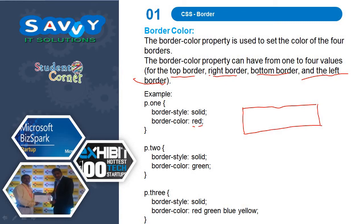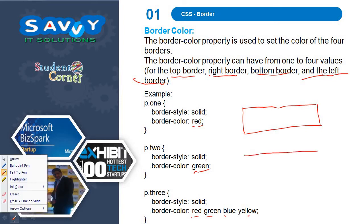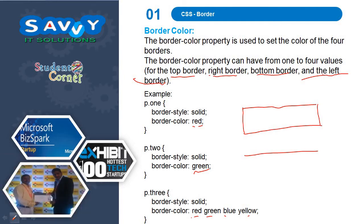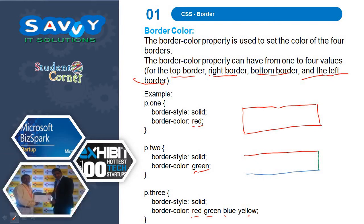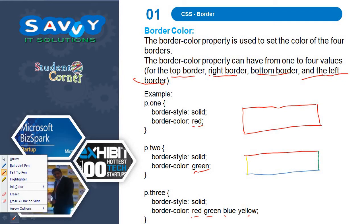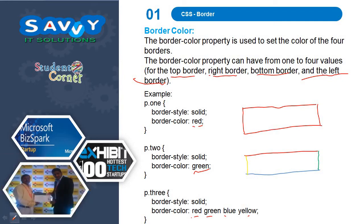Initially the color is red, so all the sides are red. I am giving green — all the sides are green. Now here one is red, green, blue and yellow. I am choosing brown for the top, next is green, next is blue, next is yellow — so like this it comes. You can also give individual color to each individual side.